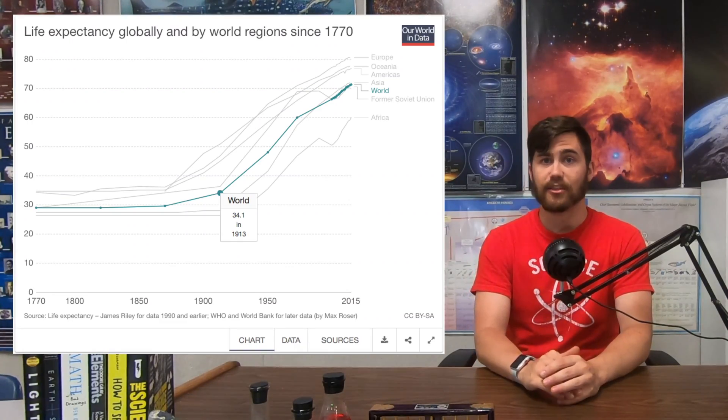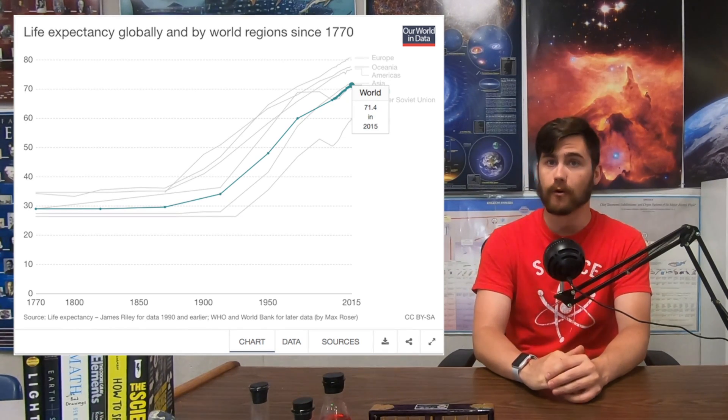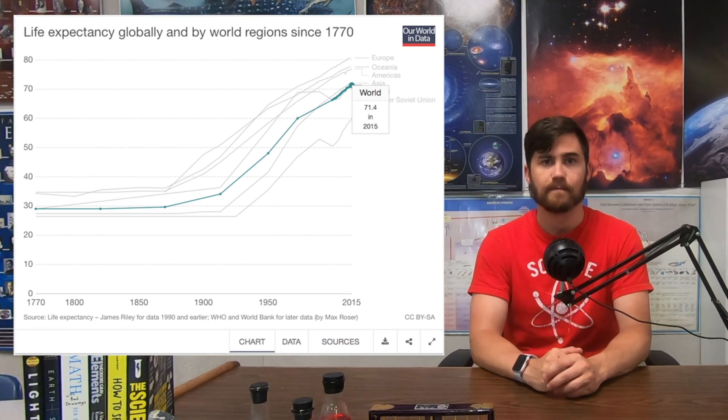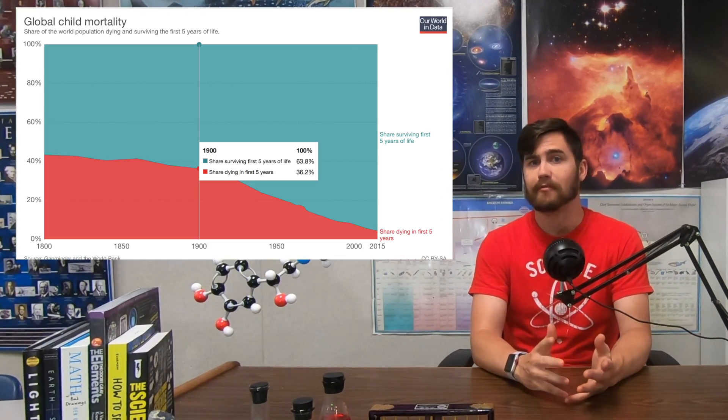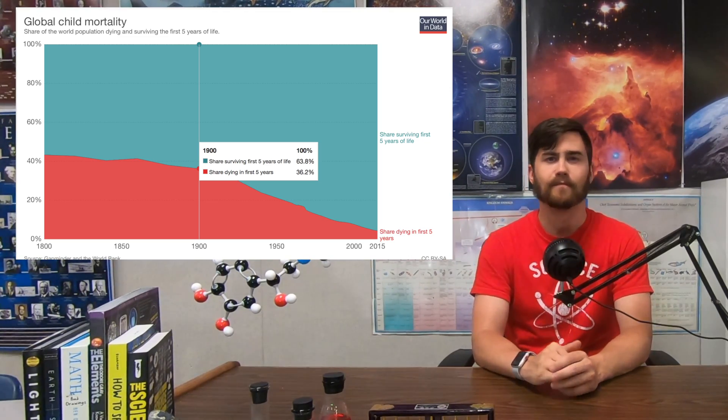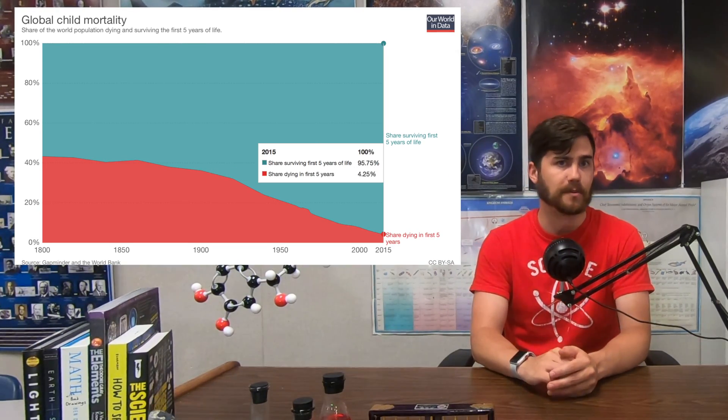Global life expectancy in 1913 was 34 years old, today it's 71.4 years. And in more developed countries, you can expect to live 10 years beyond that. The percentage of people who died before age five in 1900 globally was 36.2%. Today, it's 4.25%, and lower than 1% in more developed countries. Calvin Coolidge's son died while he was in office from an infected blister on his foot he got while playing tennis. That was the world we lived in less than a hundred years ago.